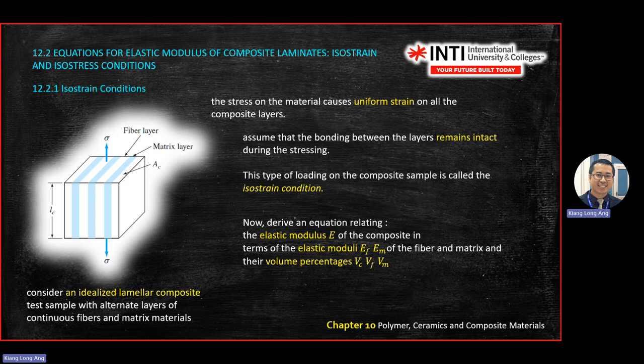For isostrain — where deformation is the same in all directions — we use elastic modulus E. We have E_F for fiber, E_M for matrix, and volume percentages V_C, V_F, and V_M for composite, fiber, and matrix respectively. These are the key parameters for composite equations.